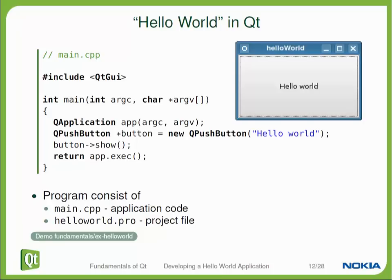The next line of code creates a QPushButton object. QPushButton is a QWidget — we will talk about that later. It will be visible on the screen. We are passing in an argument: the text "Hello World", which is the text the button is supposed to show when visible. We are creating the button with new — this is how you usually create widgets. The button by default will be invisible unless we tell it to become visible, which is why in the next line we call show on this button. The show function tells the button it is supposed to be visible once the application starts.